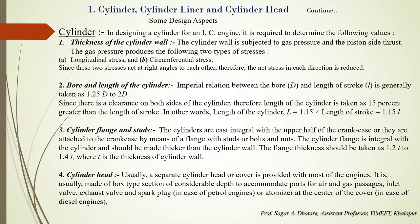Second design aspect: bore and length of the cylinder. The empirical relation between bore D and length of stroke L is that D/L generally lies between 1.25 and 2. Since there is clearance on both sides, the length of the cylinder is taken as 15% greater than the length of the stroke — in other words, the cylinder length L = 1.15 × stroke length.